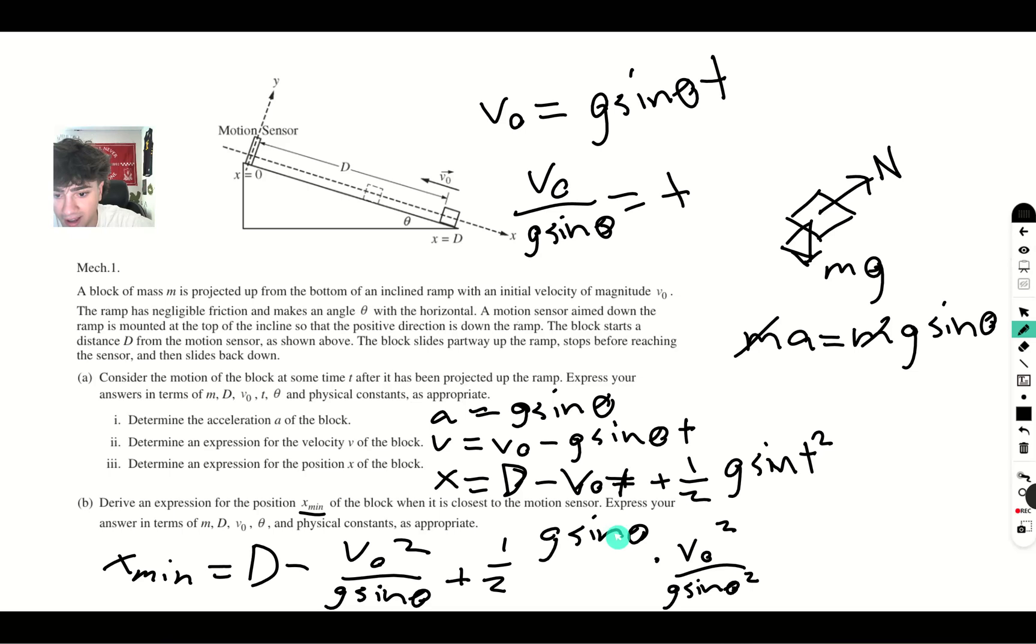So one of these g sine theta cancels out with one of these. So then we'll get minus v initial squared over g sine theta plus 1 half. So when you add those up, it will just be minus 1 half g sine theta.